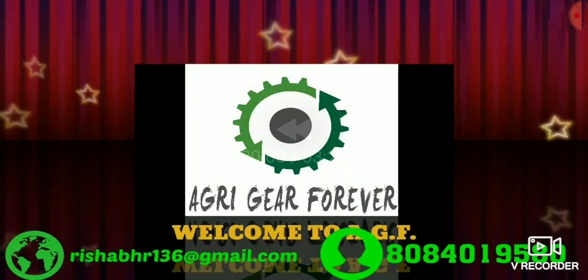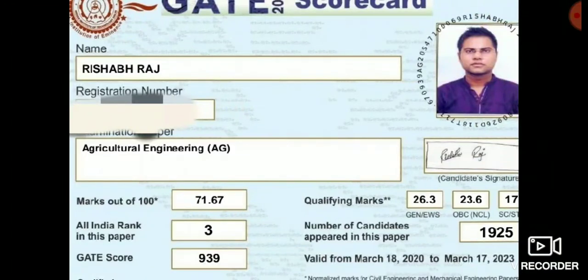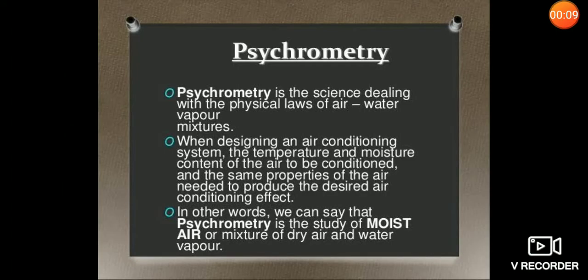Welcome to ACF, the online platform for gate agriculture engineering. Today we are going to start the new topic: psychrometrics. Psychrometrics is the branch of science which deals with the principles and laws of air and water vapor mixtures. We are fully studying this mixture in psychrometrics, and it is mostly applied in air conditioners, coolers, and refrigerators.